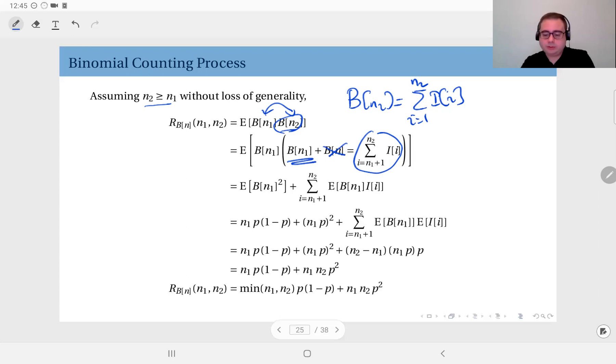So this is b of n1 and this is the sum of the rest of the component, the rest of the Bernoulli trials from n1 plus 1 up to n2.